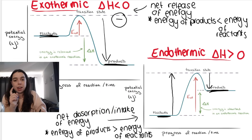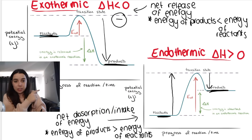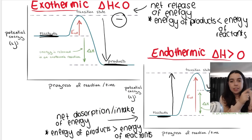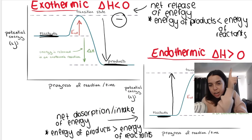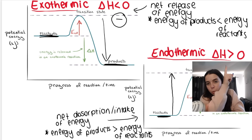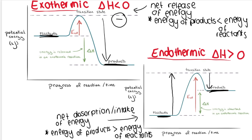Endothermic reactions, on the other hand, have a delta H — change in enthalpy or heat of reaction — that is positive, bigger than zero. The reason why is because there's a lot more energy taken in than what is released, so the products have a higher energy than the reactants.